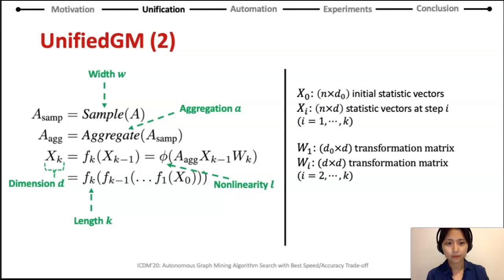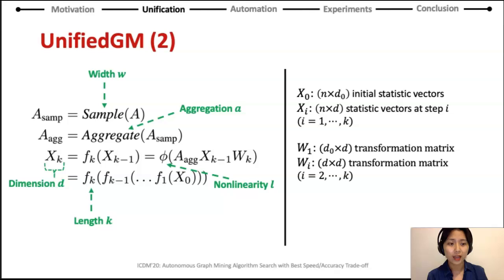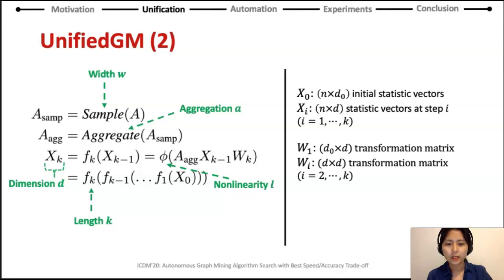Let's formulate our Unified GM. Given a binary adjacency matrix A, we first generate a matrix A-sample by randomly zeroing out entries of A, so that each row has W nonzero entries. Then we aggregate neighbors following the aggregation strategy to produce the aggregated matrix A-aggregate. The messages from the previous step, X, aggregate messages from neighboring nodes by multiplying with A-aggregate. The aggregated messages are transformed by transformation matrix W_k and passed to the nonlinear function. By repeating this process, graph algorithms operate under our Unified GM framework.